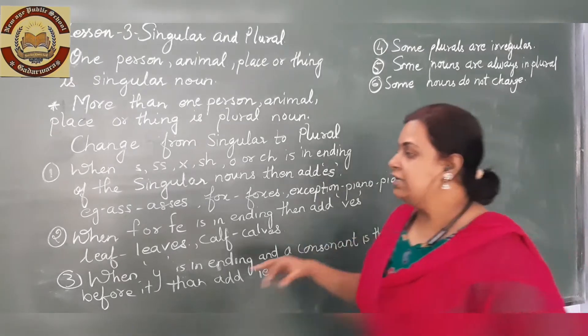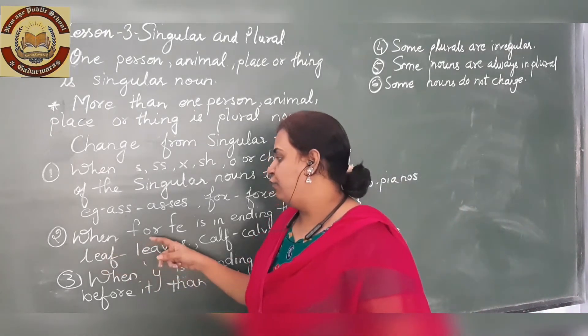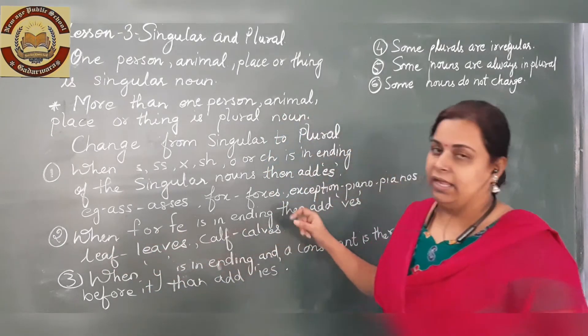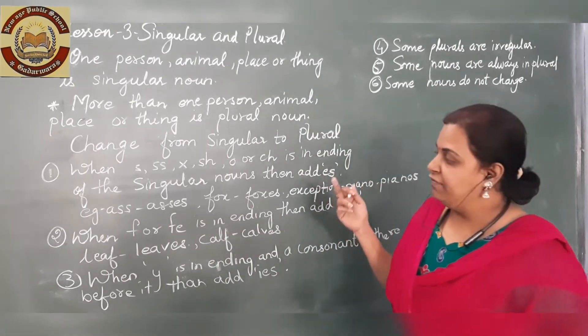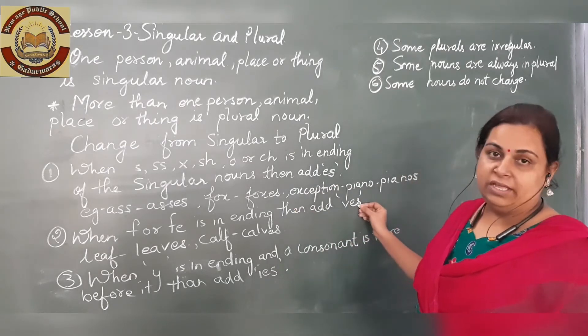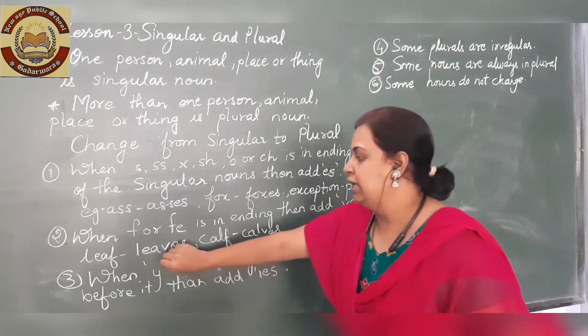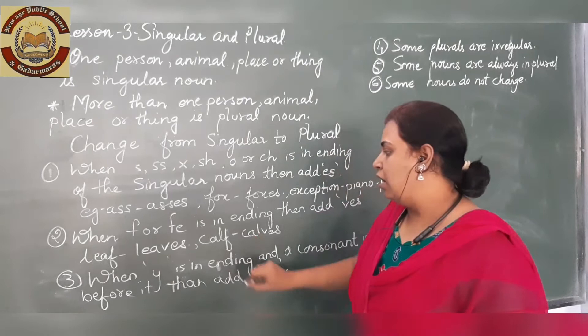The next point: when F or FE is at the ending, change it to V and add ES. For example, leaf becomes leaves, calf becomes calves.